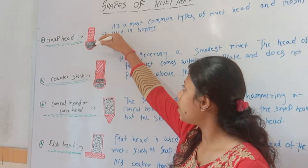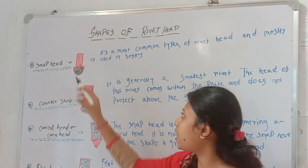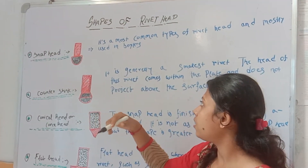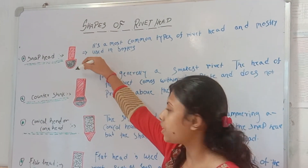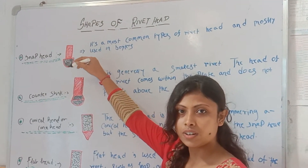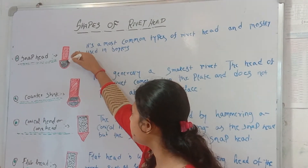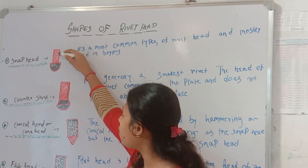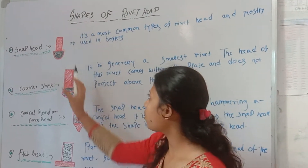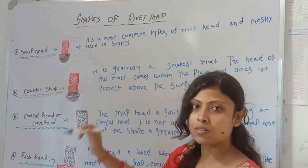The snap head is in a side-to-half circle. This wall is the middle height of the bottom, and this wall is the middle height of the root of the rivet.